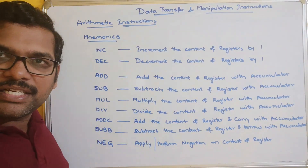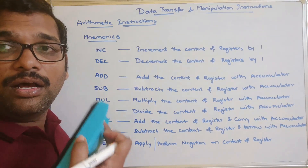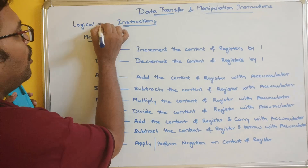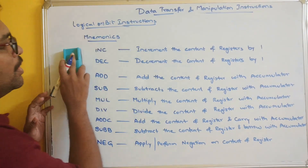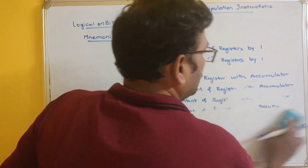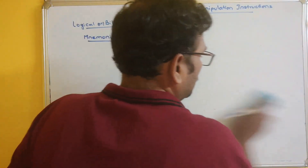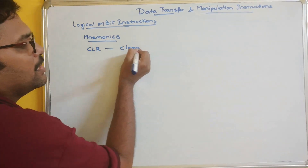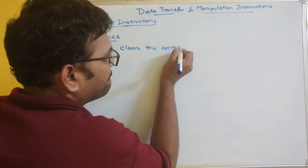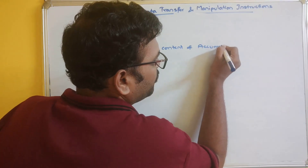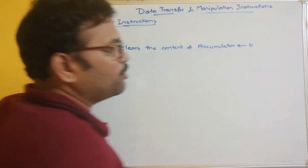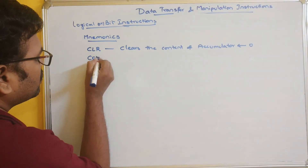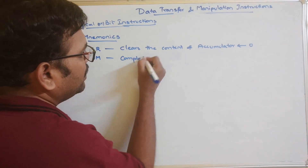Now we will go with the second category of instructions, that is logical or bit manipulation instructions. The first is CLR, which clears the content of the accumulator - that means the accumulator will be set to 0. That is the clear instruction. Next, COM gives a complement - it complements the content of the accumulator.